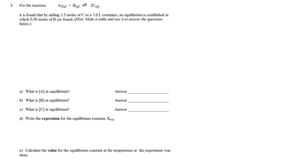Okay, a little smaller font. Found that by adding 1.5 moles of C into a 1.0 liter container at equilibrium, established, established in which 0.3 moles of B are found. So, this one's a little bit different, but I'm going to draw a big table.